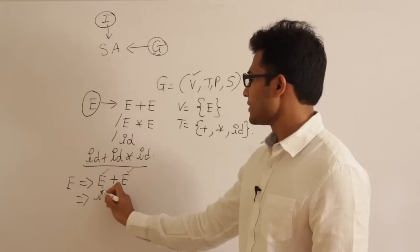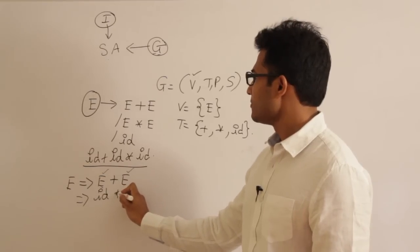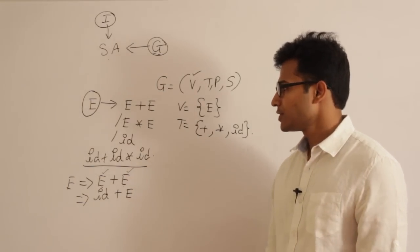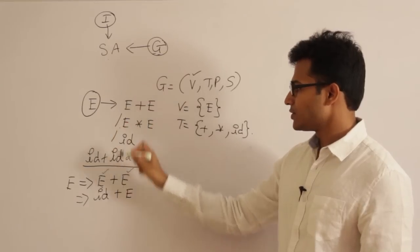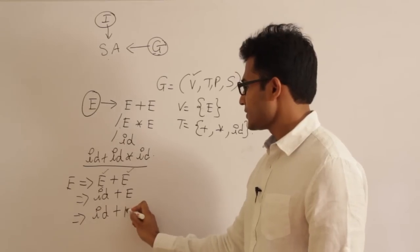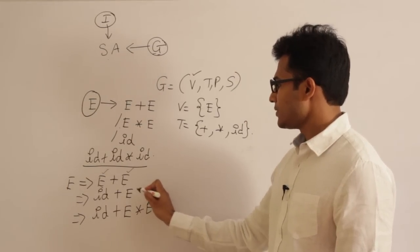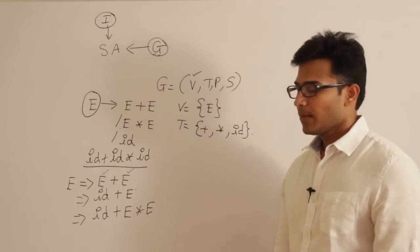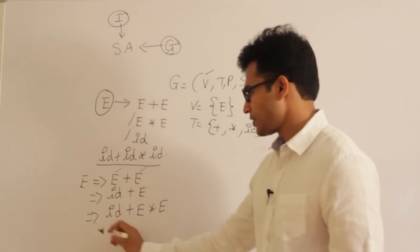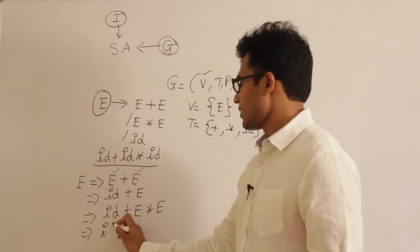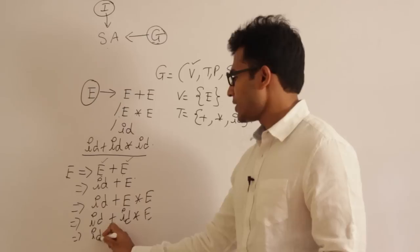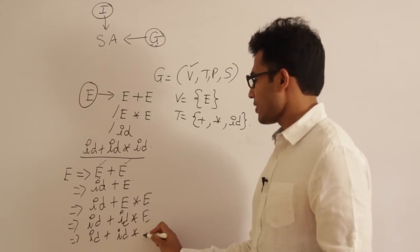Continuing the left-most derivation: E ⇒ E + E ⇒ id + E ⇒ id + E * E ⇒ id + id * E ⇒ id + id * id. At each step the left-most variable is replaced. This is the left-most derivation (LMD) for the string id + id * id.